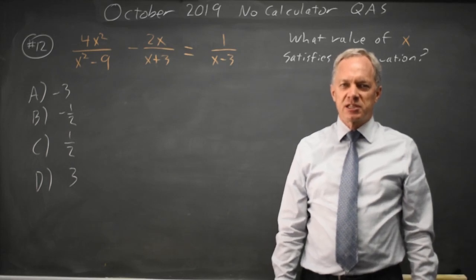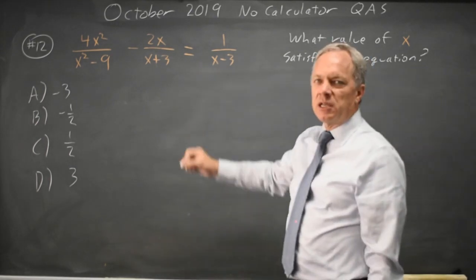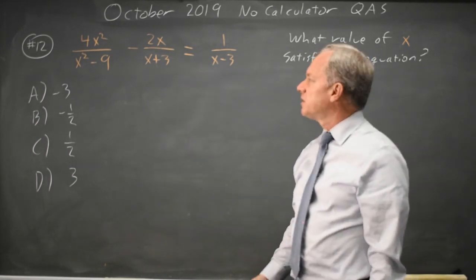This is question 12 from the October 2019 SAT. The College Board is asking us to solve a rational equation, and that's frequently awkward, and this case definitely delivers.